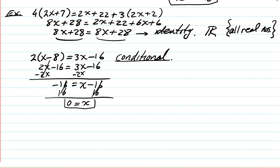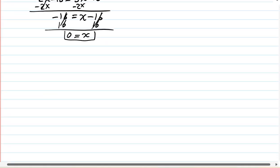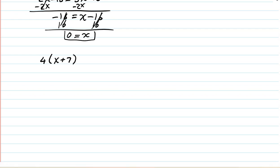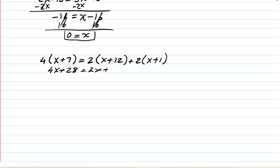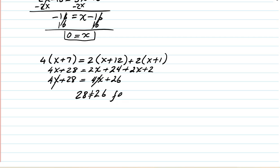One more example: 4 times (x plus 7) equals 2 times (x plus 12) plus 2 times (x plus 1). Remove parentheses: 4x plus 28 equals 2x plus 24 plus 2x plus 2. Combine right side: 4x plus 26. Subtract 4x from both sides — variables disappear and we get 28 equals 26, which is a false statement. This is a contradiction — no solution.